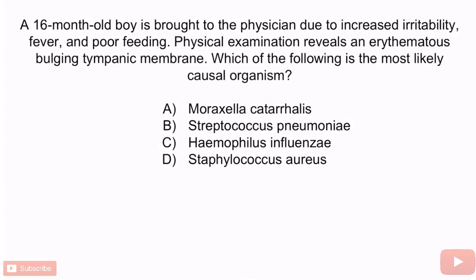Let's review with a question. A 16-month-old boy is brought to the physician due to increased irritability, fever, and poor feeding. Physical examination reveals an erythematous bulging tympanic membrane. Which of the following is the most likely causal organism? A. Moraxella catarralis. B. Streptococcus pneumoniae. C. Haemophilus influenzae. Or D. Staphylococcus aureus. From the question stem, this boy has signs and symptoms consistent with acute otitis media — the erythematous bulging tympanic membrane is the key to making this diagnosis.